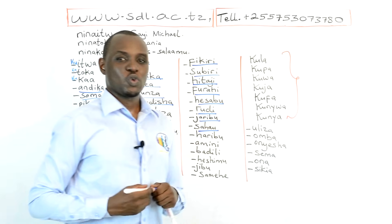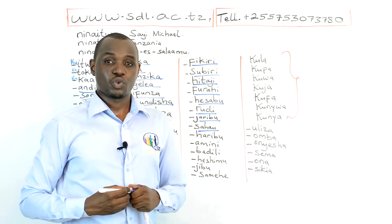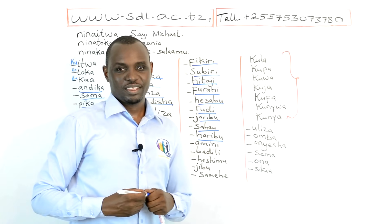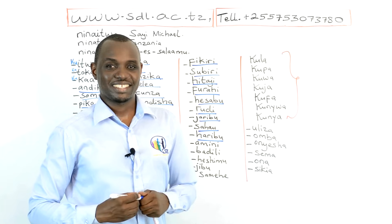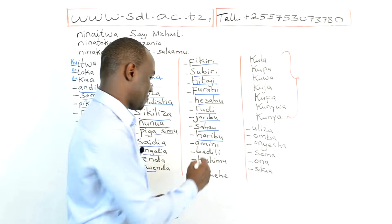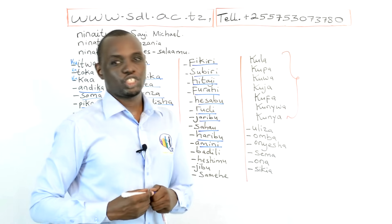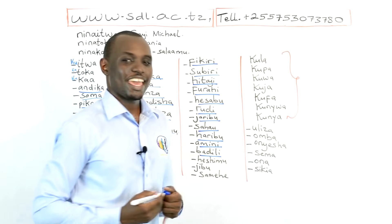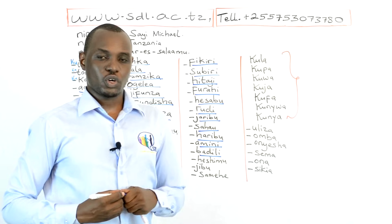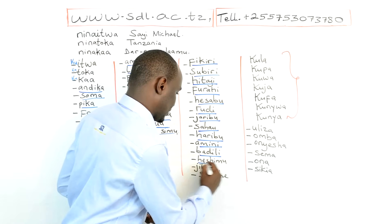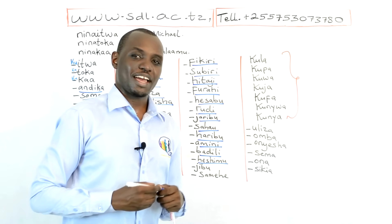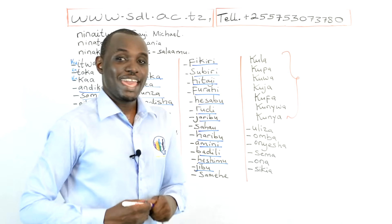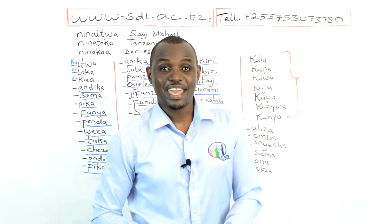Haribu means to destroy; Ku Haribu means to destroy. Amini means believe or trust; Ku Amini means to trust, to believe. Badili means change; Ku Badili means to change. Hesimu means respect; Ku Hesimu means to respect. Jibu means answer; Ku Jibu means to answer. Samehe means forgive; Ku Samehe means to forgive.